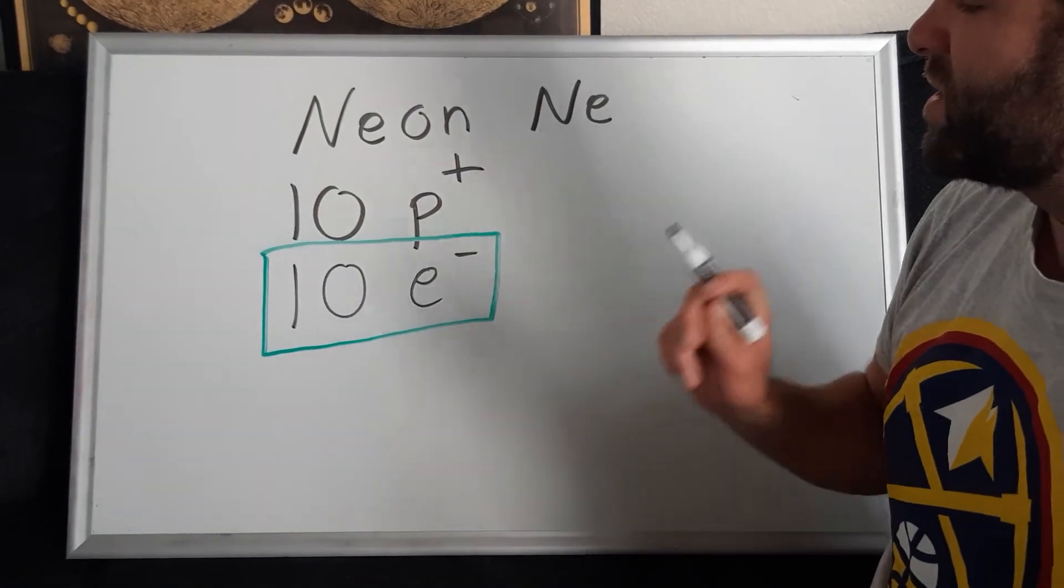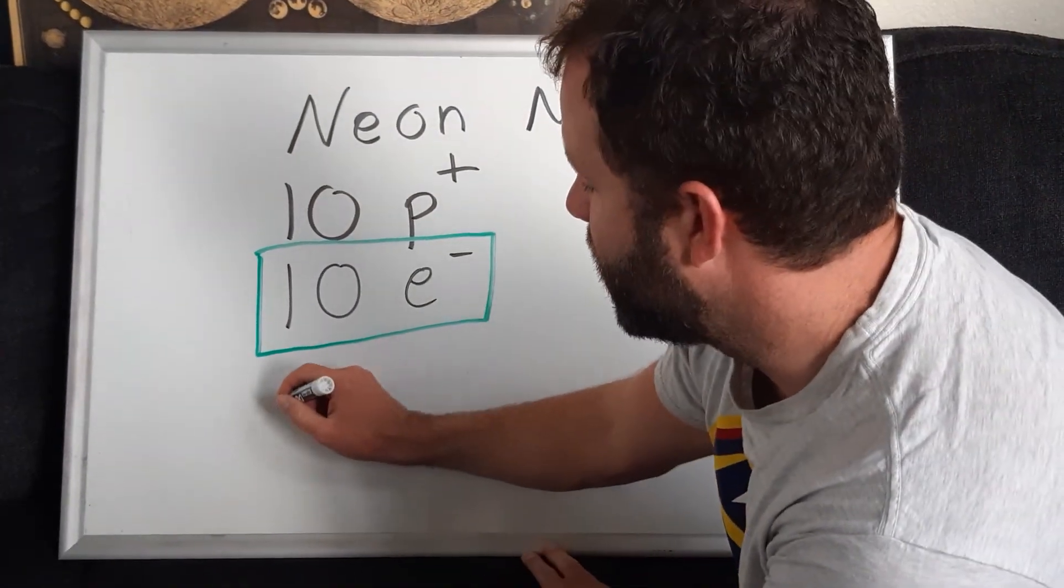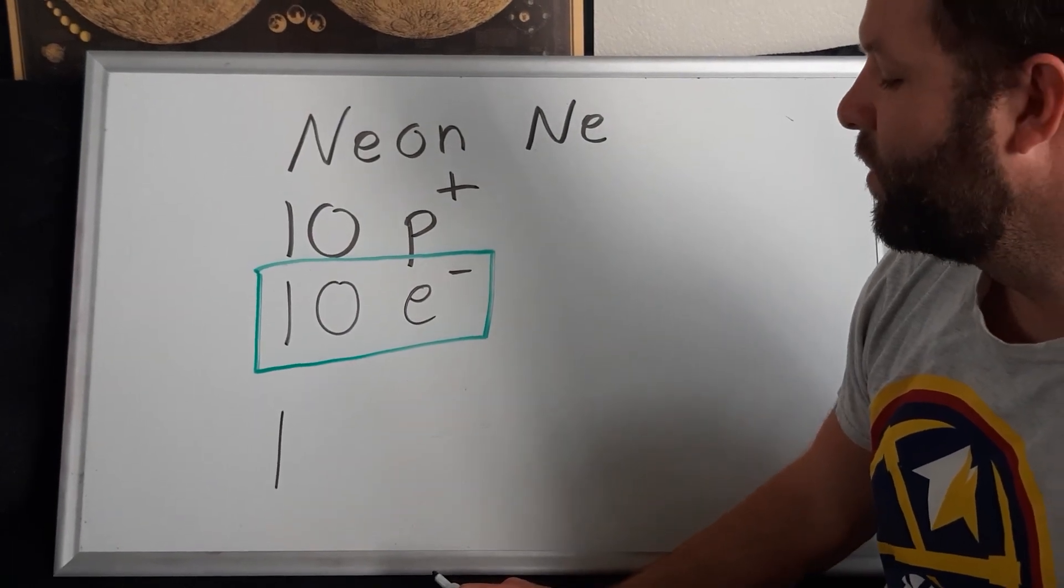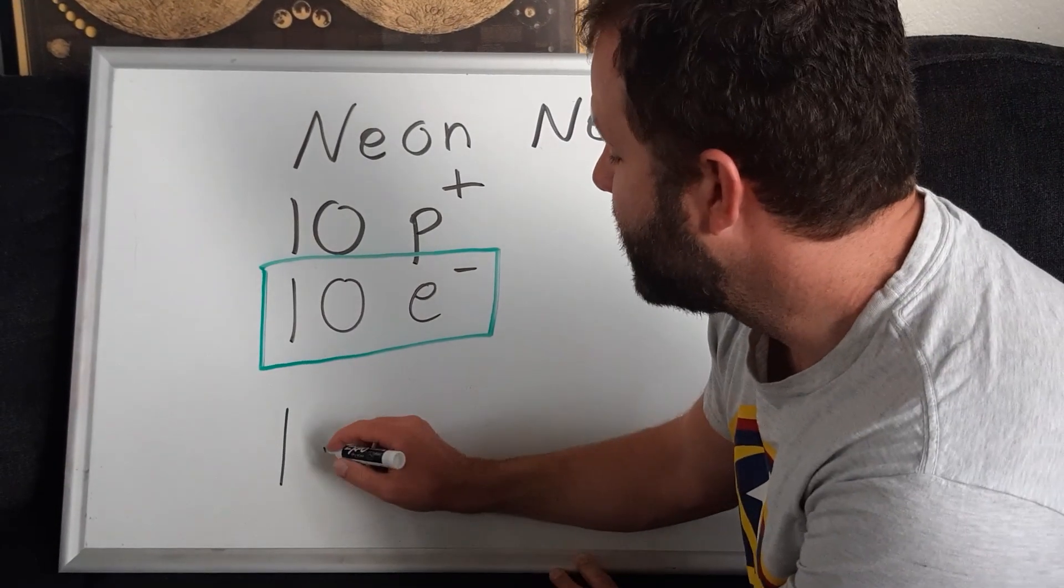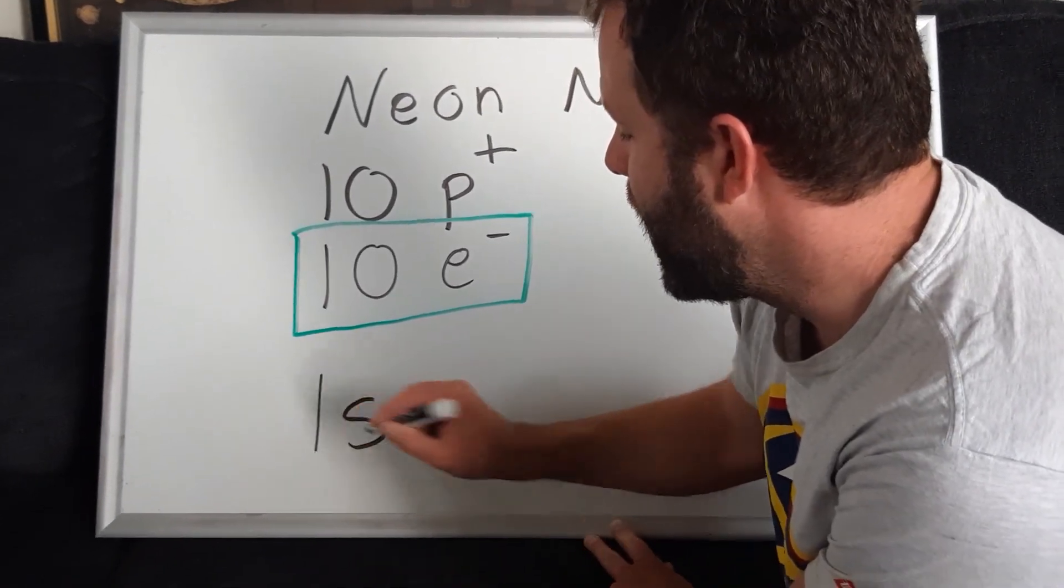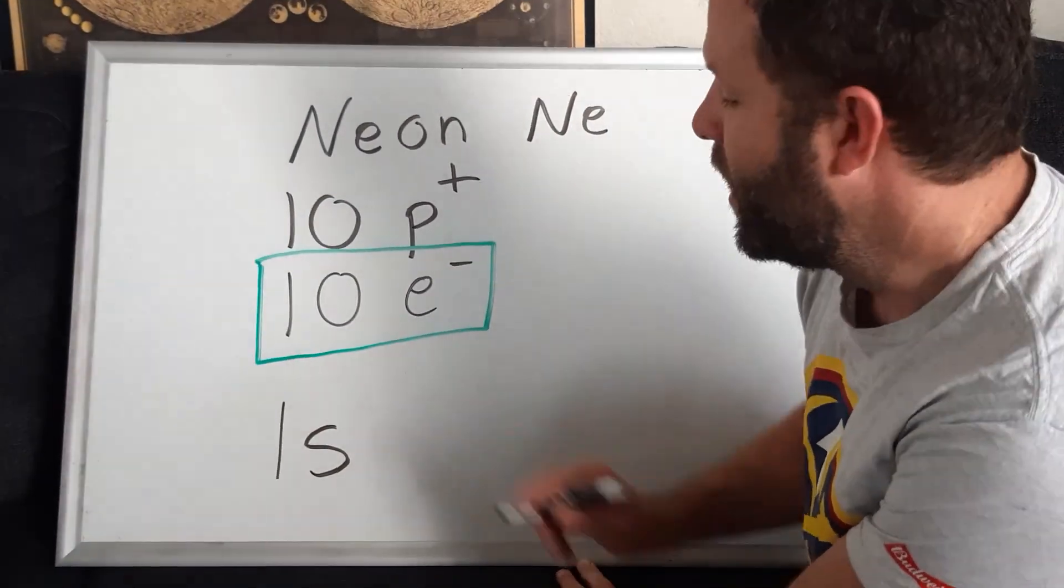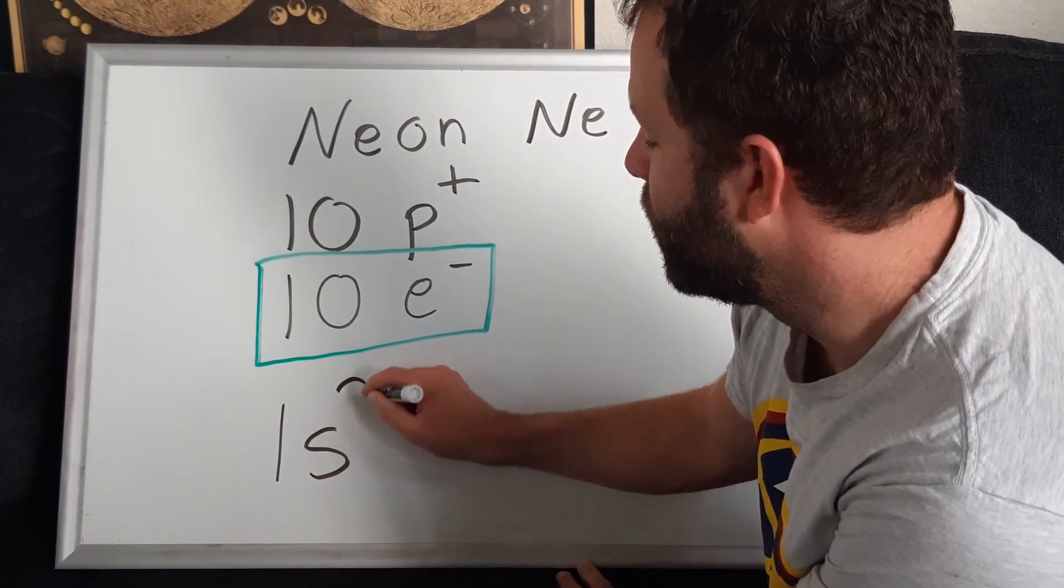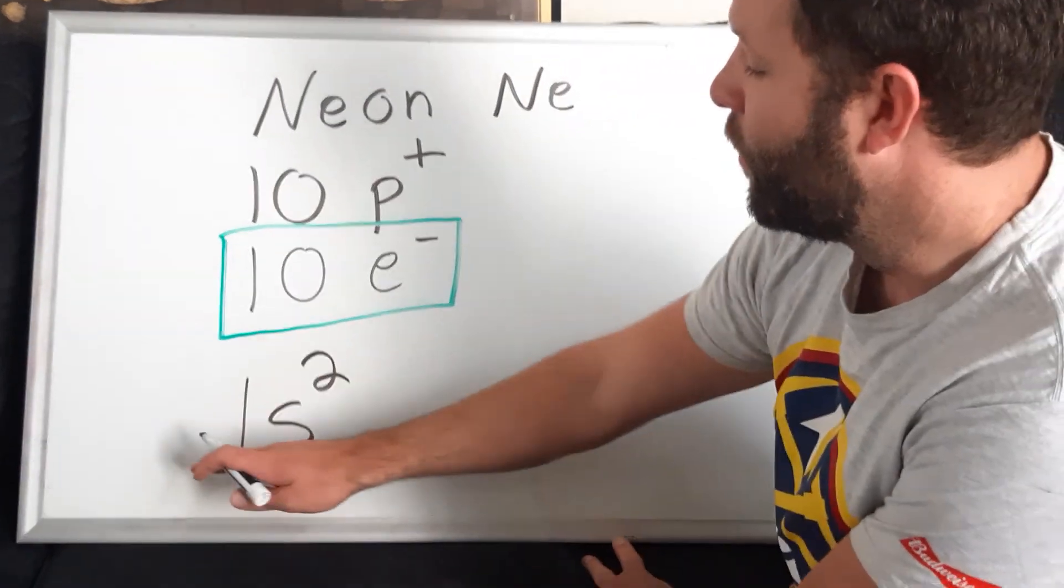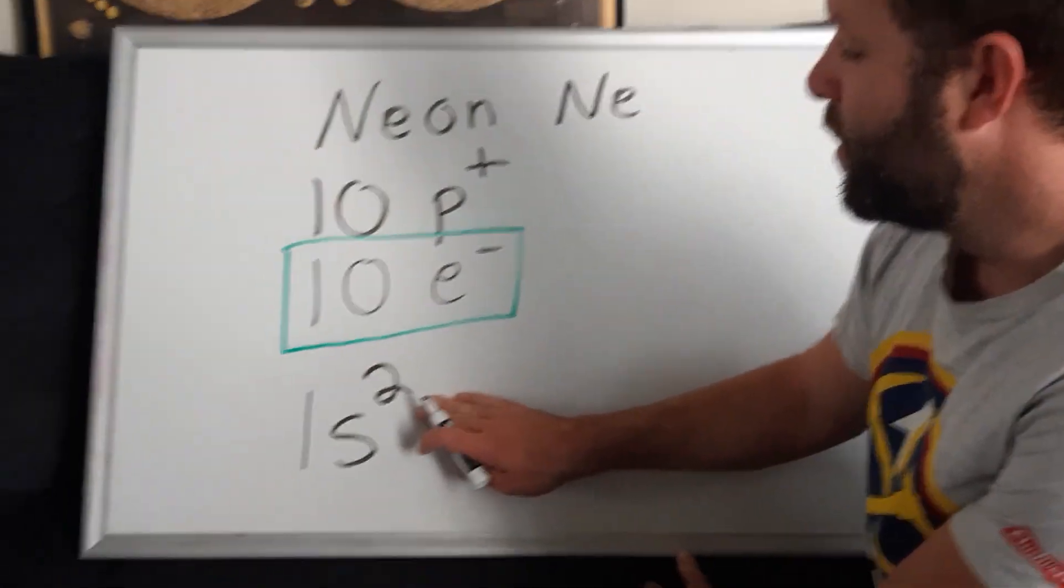Our first energy level we annotate with a one, or we note with a one. We know that in the first energy level we have an s orbital shape, and we know that the s orbital shape can hold two total electrons. One s is 2.